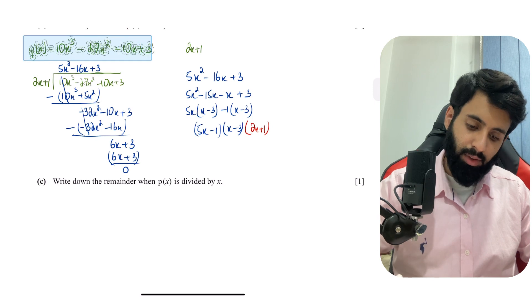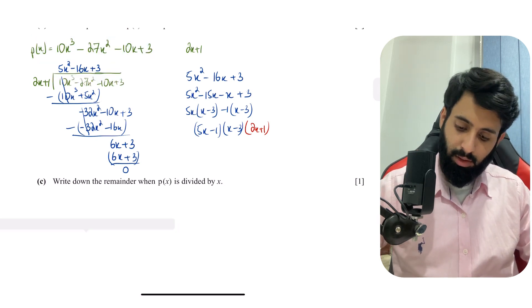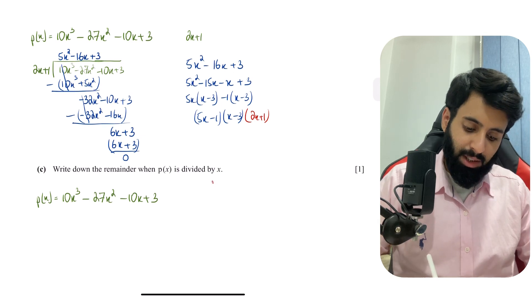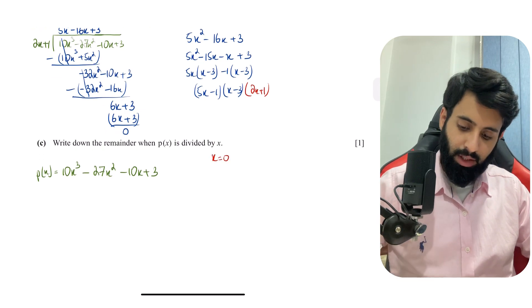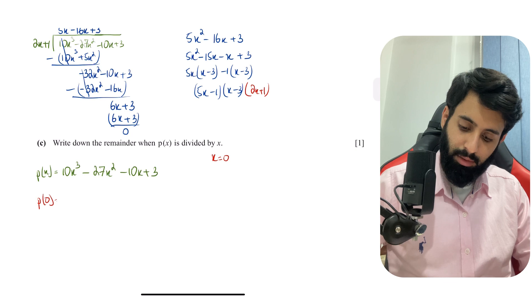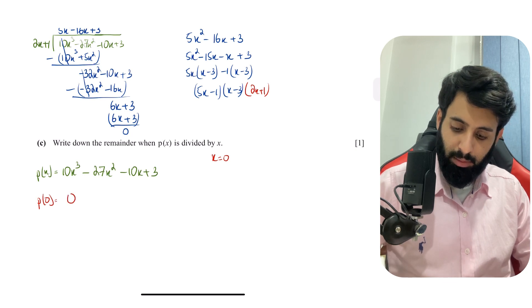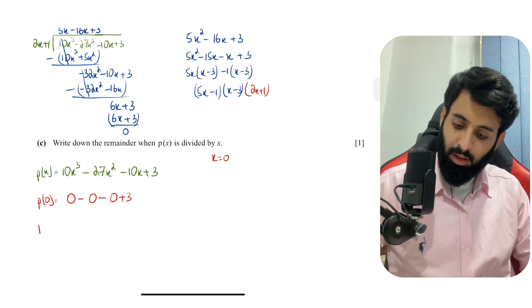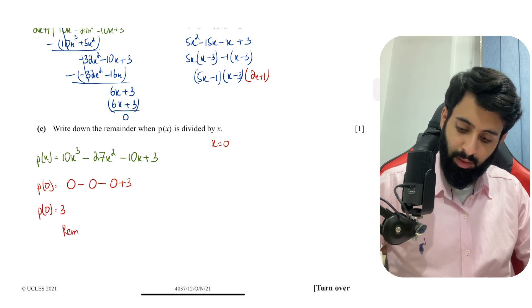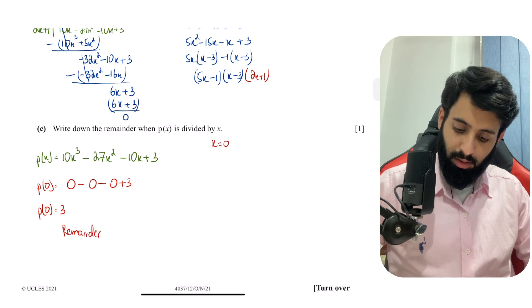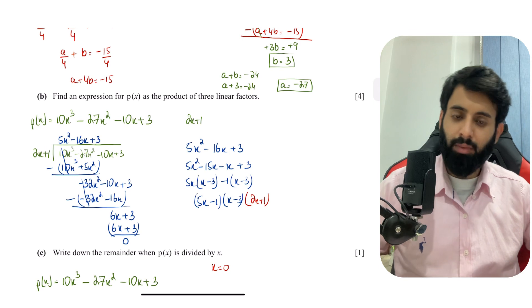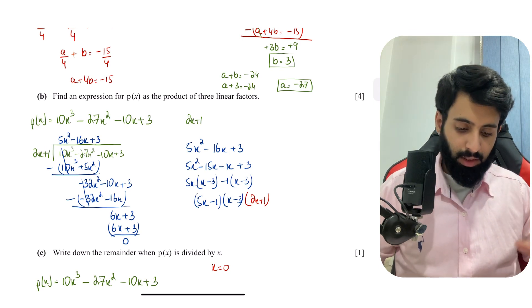Part c: find the remainder when p(x) is divided by x. Dividing by x means x = 0, so substitute x = 0: p(0) = 0 − 0 − 0 + 3 = 3. The remainder is 3.